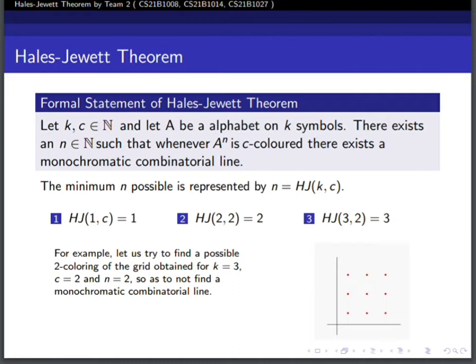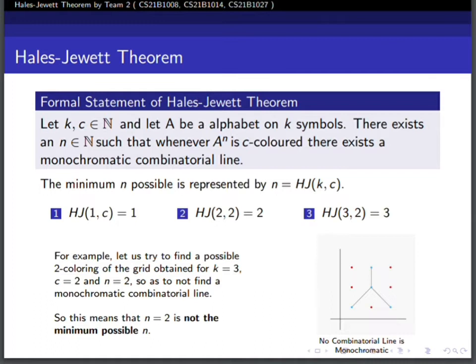Let us check if we can get a 2-coloring to avoid producing a monochromatic combinatorial line. It is clear that we can get a possible coloring as shown in the figure.